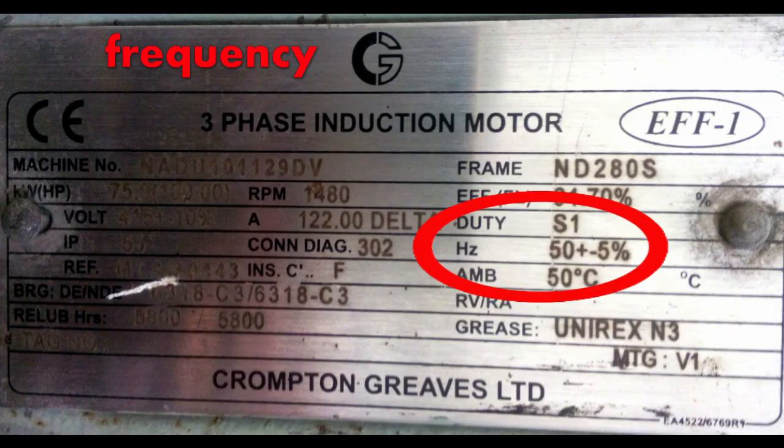Next comes the frequency. Generally, on the nameplate, it is written 50 hertz plus minus 5% or 60 hertz plus minus 5%. If it is written 50 hertz plus minus 5%, that means you can run the motor in this range, 47.5 hertz to 52.5 hertz. Only then your machine will give good efficiency.